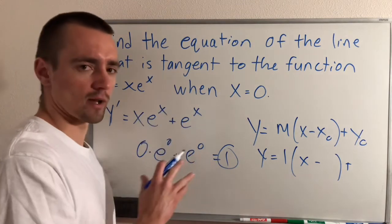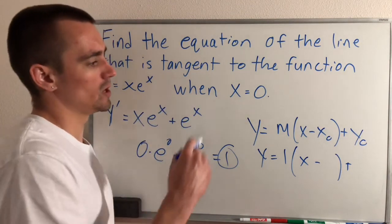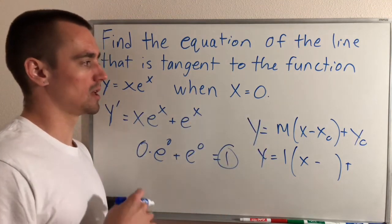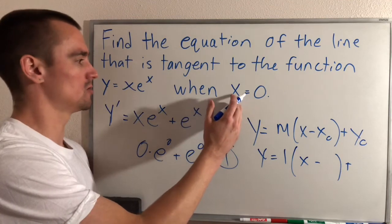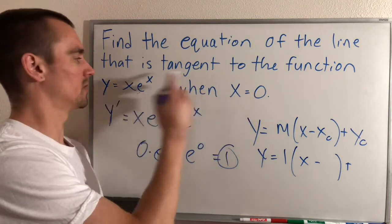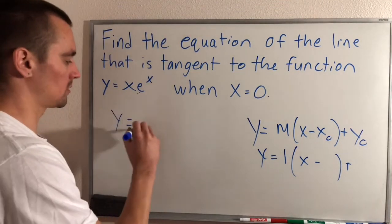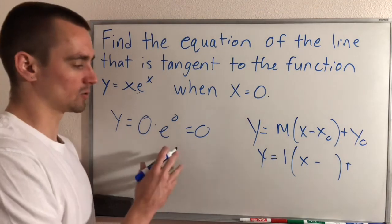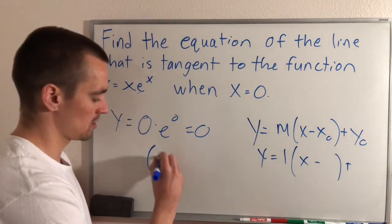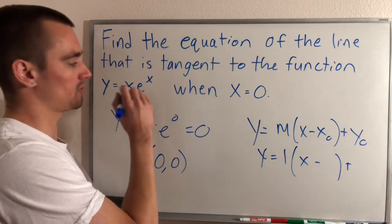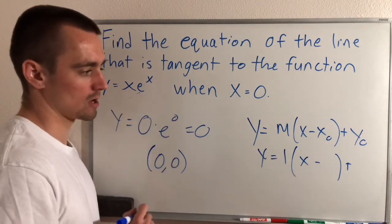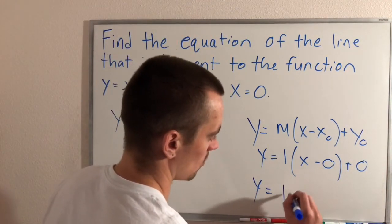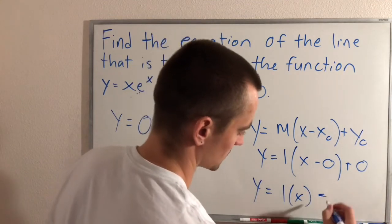We aren't exactly given an x, y coordinate, however we know that our tangent line has to share a point with this function when x equals 0. So to find the y value that corresponds with that x value, all we have to do is plug 0 into our original function. If we plug 0 in, we get y equals 0 times e to the 0, which is just 0 times 1, which is 0. So when x equals 0, y equals 0 — the point (0, 0) lies on this function, and our tangent line also needs to go through (0, 0). Putting 0 for x₀ and 0 for y₀ gives us y equals 1 times x plus 0, which is just y equals x.